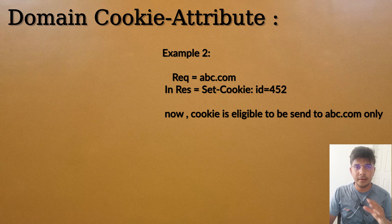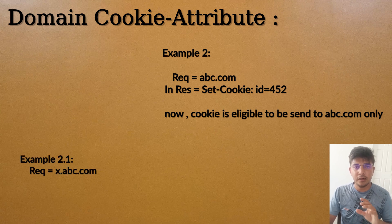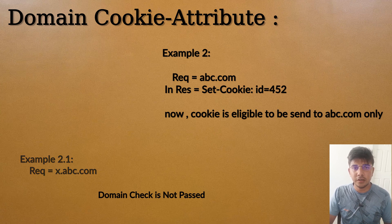In another example, the request is abc.com but in the response, the set-cookie has only set the key and value without the domain attribute. In this case, if a request is sent to x.abc.com, the domain check fails because the domain was not set, so subdomains are not eligible for sending the cookie, and x.abc.com is a subdomain of abc.com.